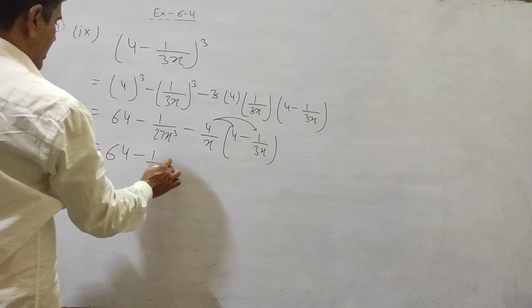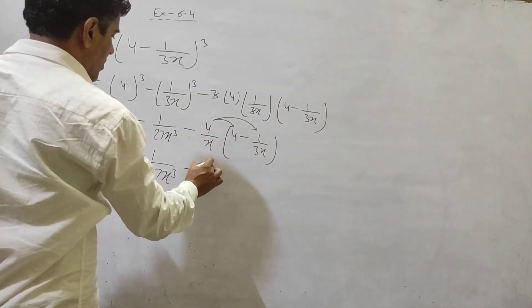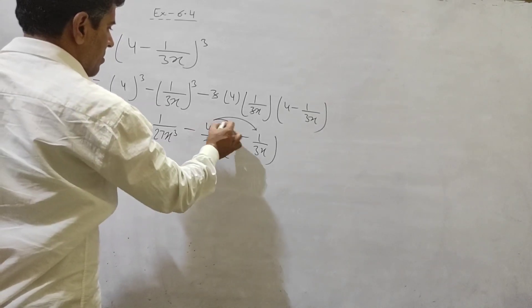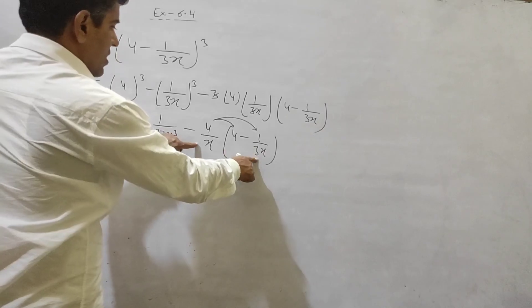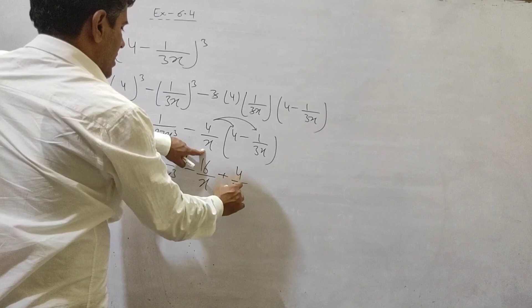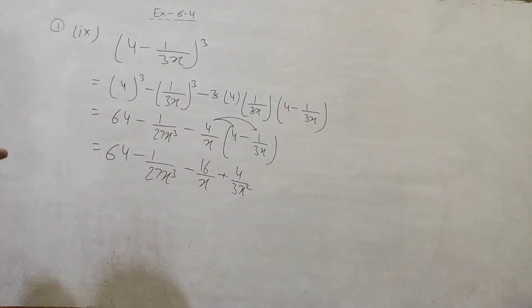64 minus, 4 minus 4, 4 minus 4, 4, 4, 16 by 27 X cube minus minus plus in ko kare hai. 4 multiply 1, 4. 1, 3, X, X, X square. Equation number 1, jo hai complete ho ta hai.